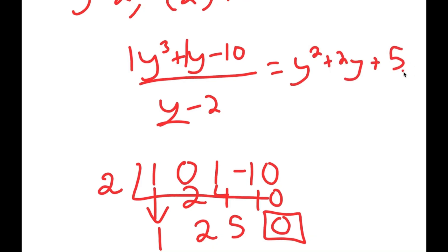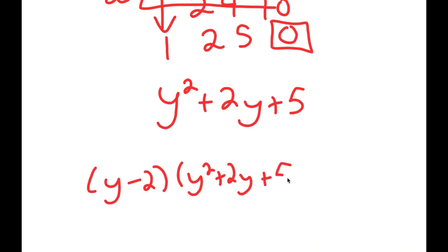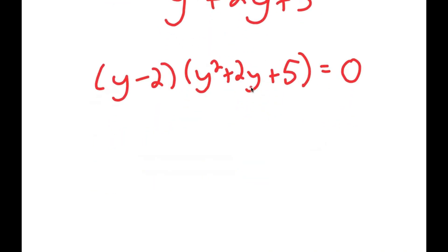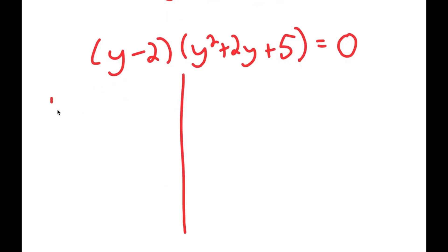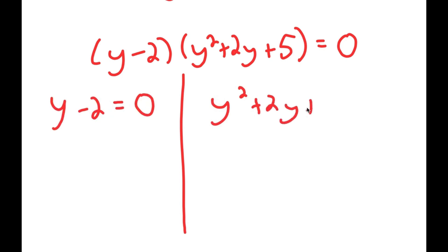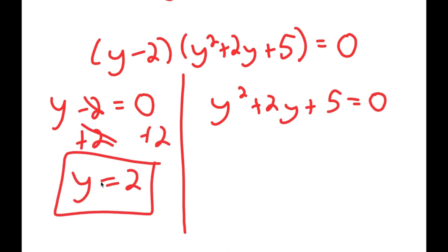So now we can say that y minus 2 times y squared plus 2y plus 5 is equal to 0. Using this equation, we can find all solutions to our original equation. This gives us two equations: y minus 2 equals 0, and y squared plus 2y plus 5 equals 0. For y minus 2 equals 0, I just add 2 on both sides and get y equals 2 — this is the solution we already found.